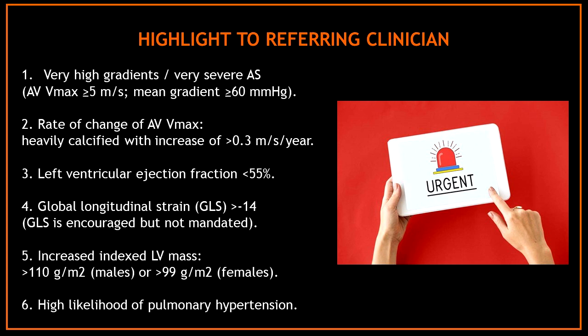Number three: if you have a left ventricular ejection fraction less than 55%. Number four: a global longitudinal strain more than minus 14%. Number five: an increased indexed left ventricular mass. And number six: high likelihood findings of pulmonary hypertension.